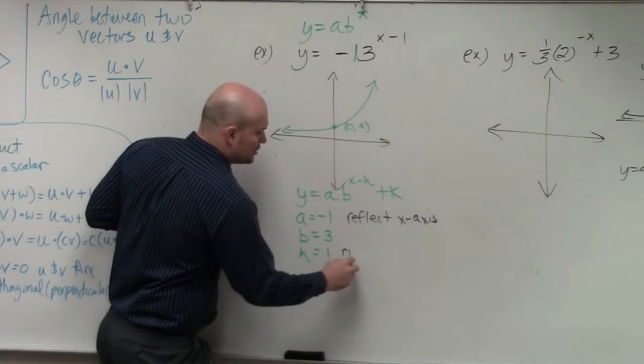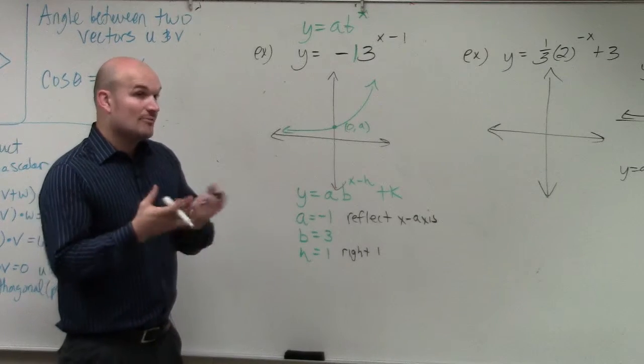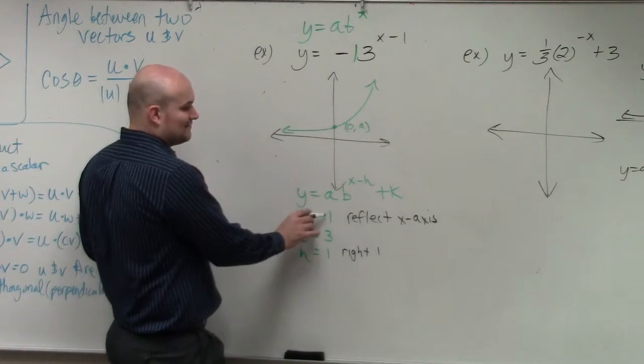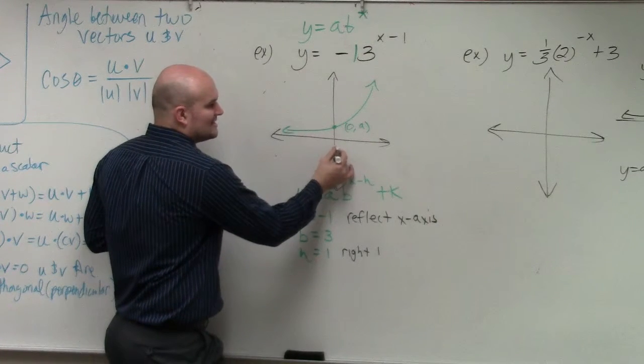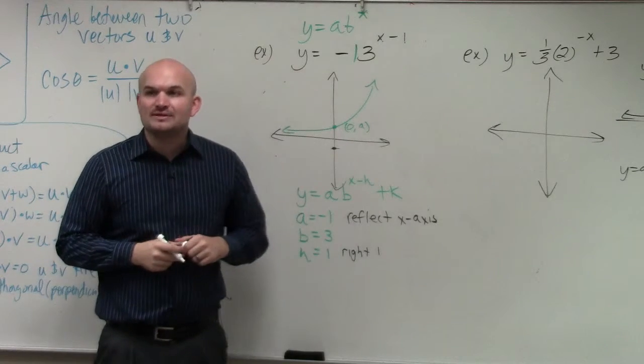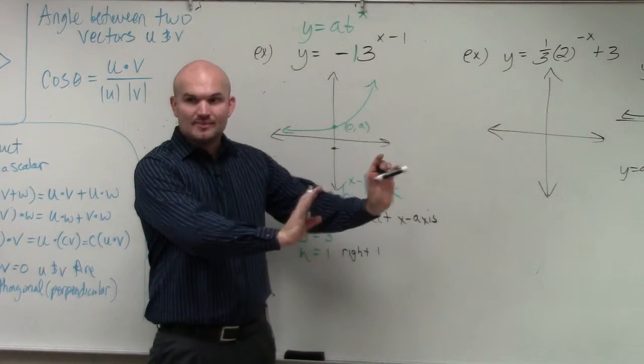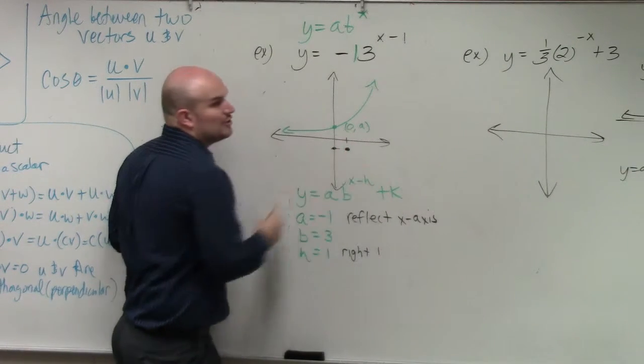And then h is going to tell us to go right 1. Now remember, a is also where the graph crosses the y-axis. So if a is negative 1, that means my new y-intercept is at 0, negative 1. But then what happened? My graph got shifted to the right one. So therefore, now that's my new y-intercept.